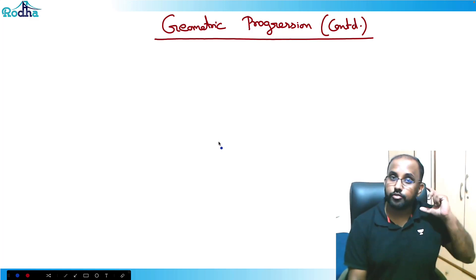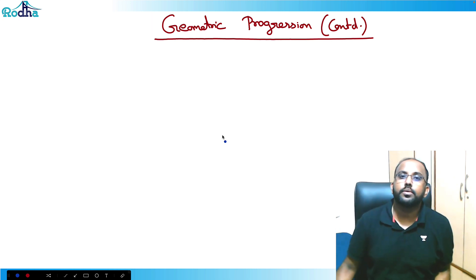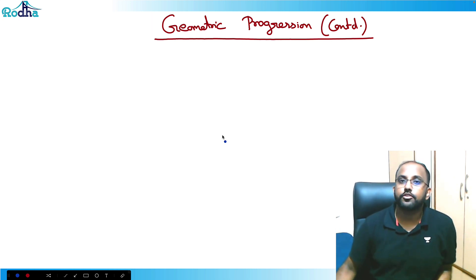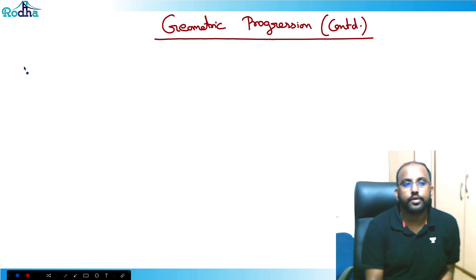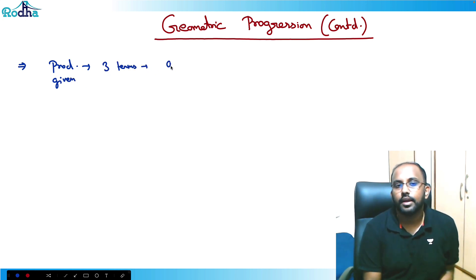Hi guys, this video will continue geometric progression. What we have learned in GP till now is how to assume terms. For example, if the product is given, and if there are three terms, we need to assume those terms as a/r, a, and ar.